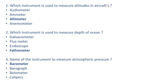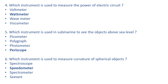Which instrument is used to measure the power of an electric circuit? We have four options: voltmeter, wattmeter, wave meter, viscometer. The right answer is wattmeter — it is an instrument used to measure the power of an electric circuit.